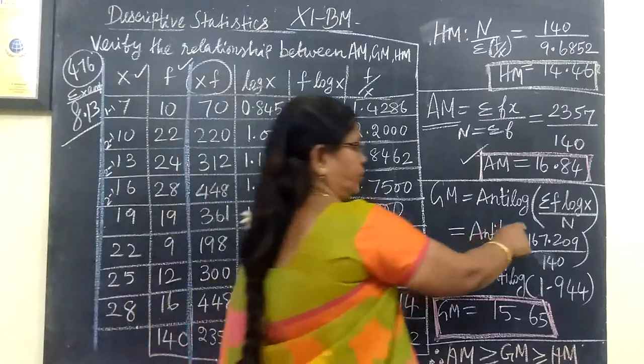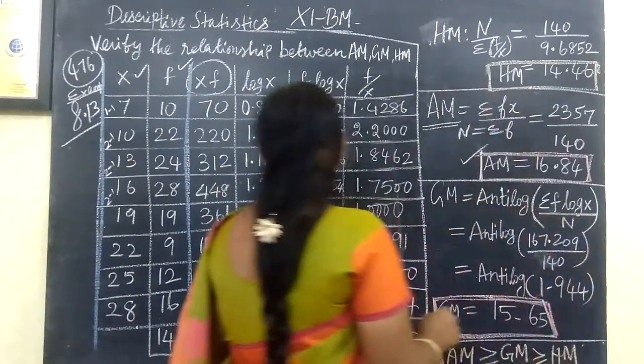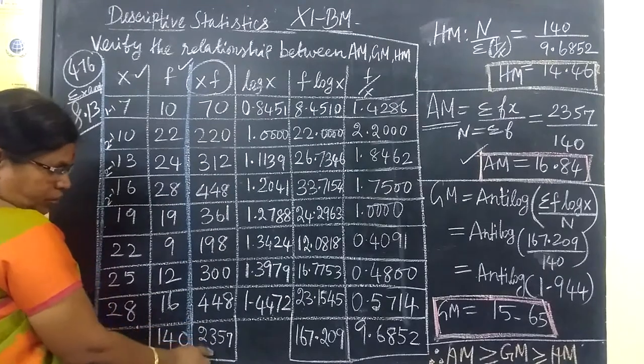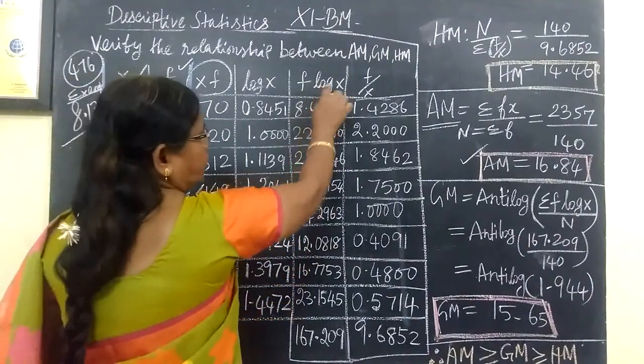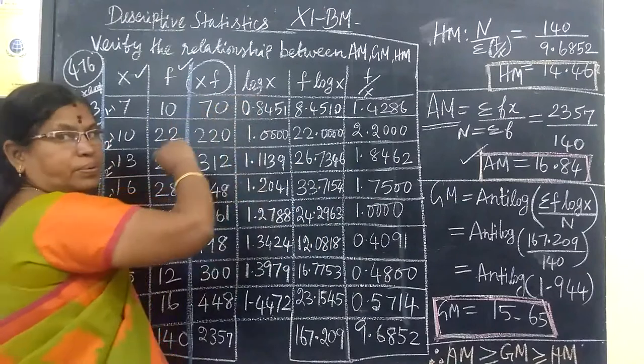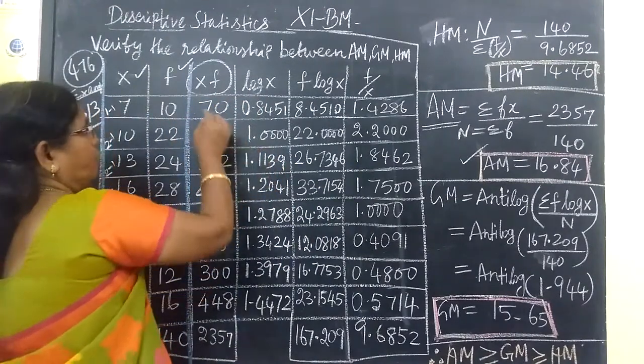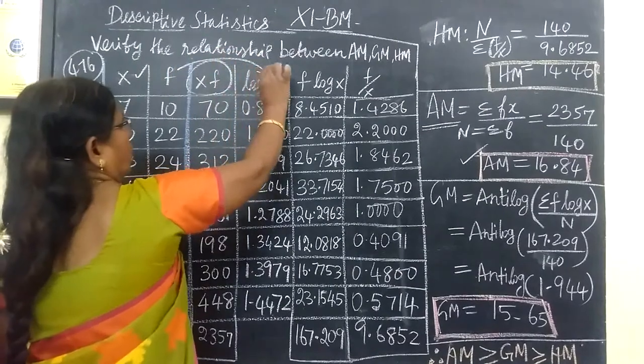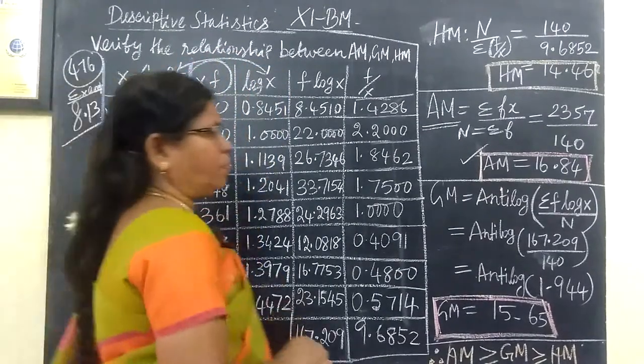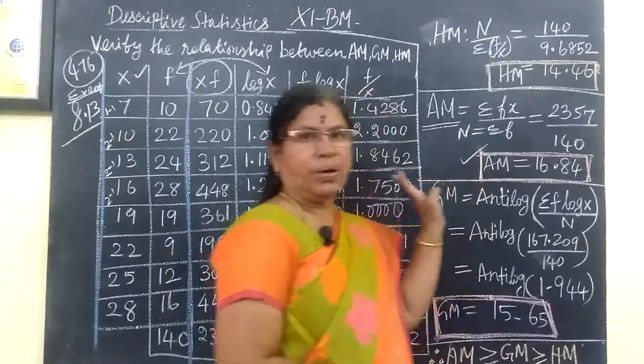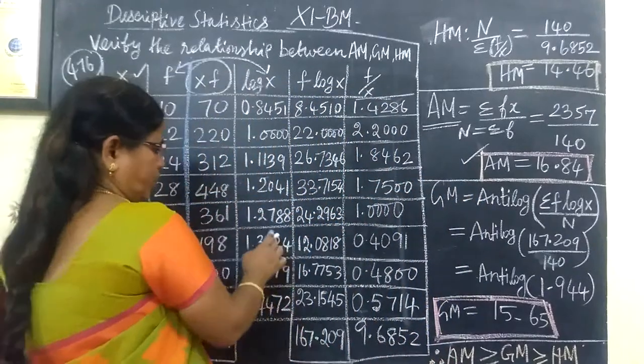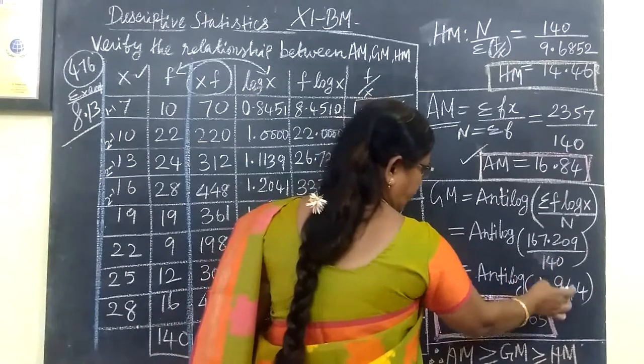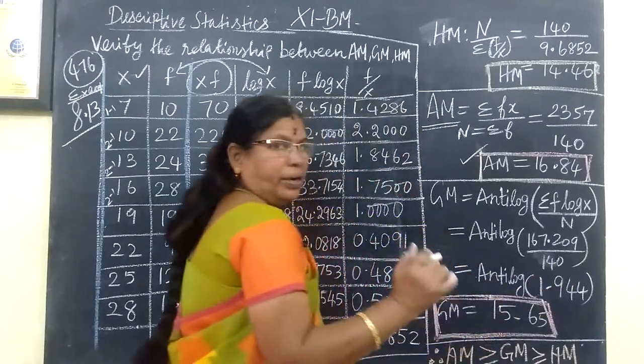Then sigma f into log x divided by n. Next we need to find f into log x. We multiply f times log x and form the tabular column. We get 167.209 divided by 140.